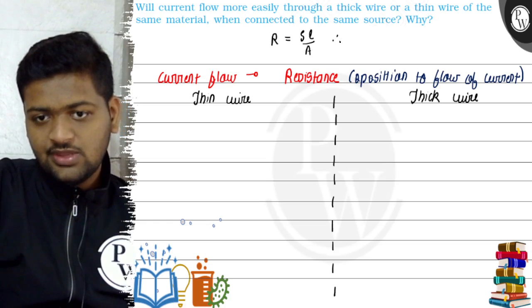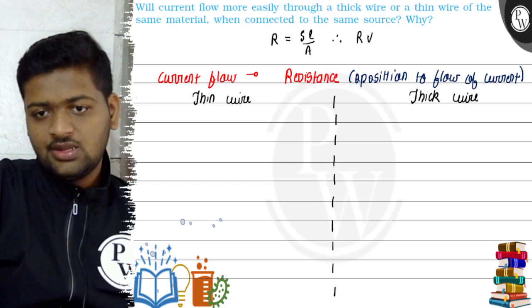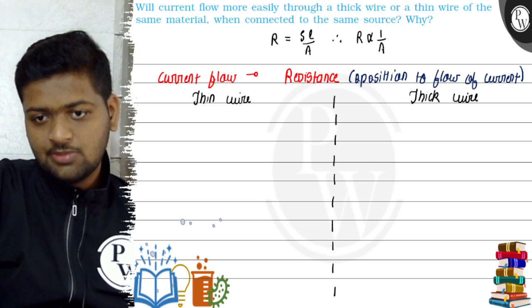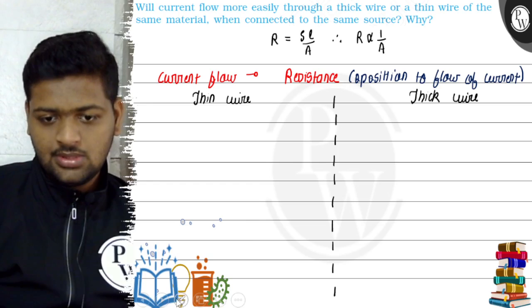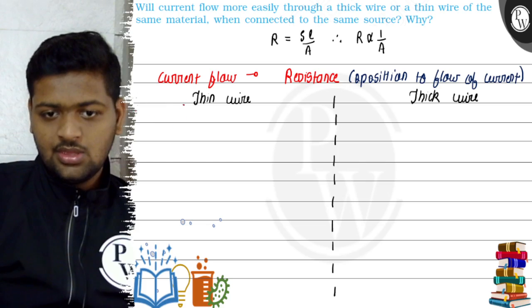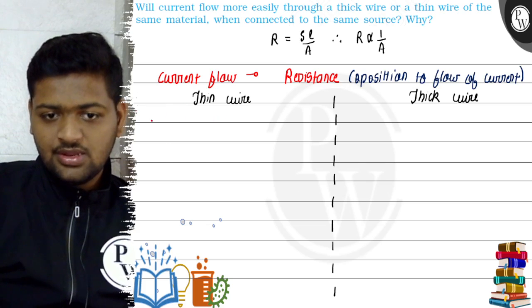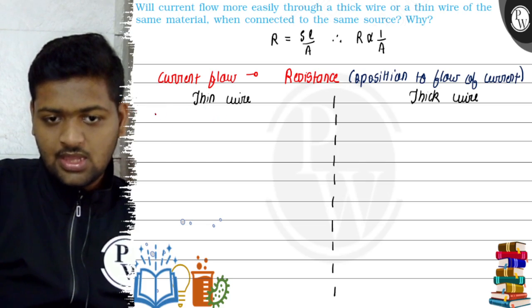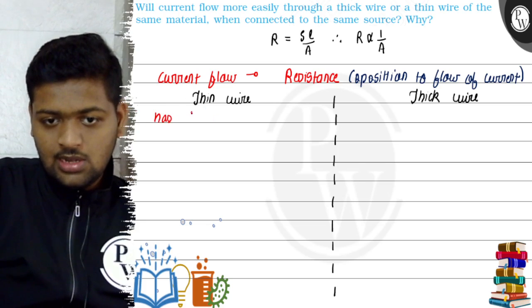It is very clear from this particular formula that resistance is inversely proportional to area. Now we will solve this question. So first of all, thin wire has lesser area.